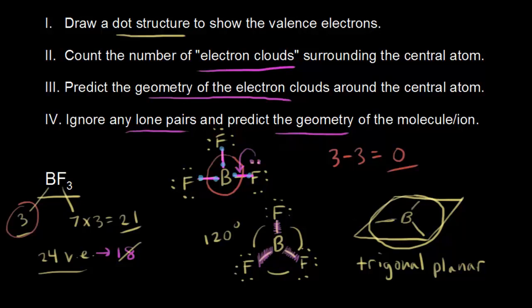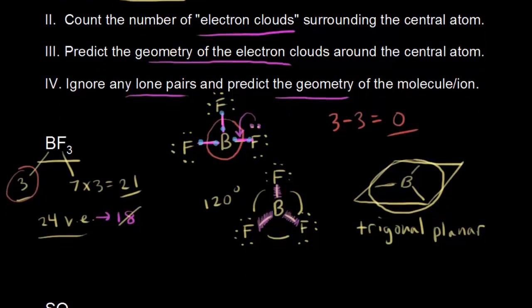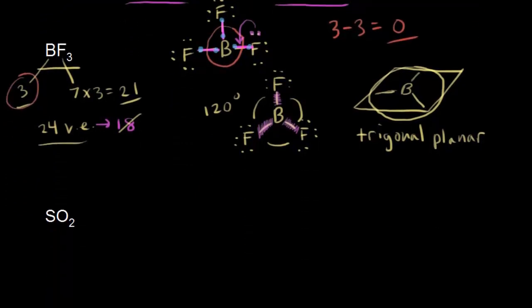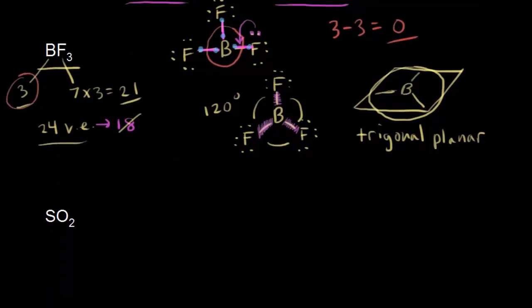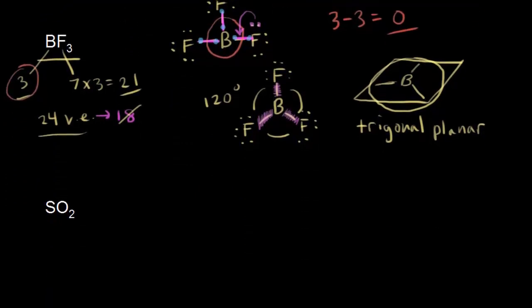Let's do another example of a molecule that has three electron clouds: sulfur dioxide. Let's count up the number of valence electrons. Sulfur is in group six, so six valence electrons. Oxygen is also in group six — six times two is 12. 12 plus six is 18, so we have 18 valence electrons for our dot structure.